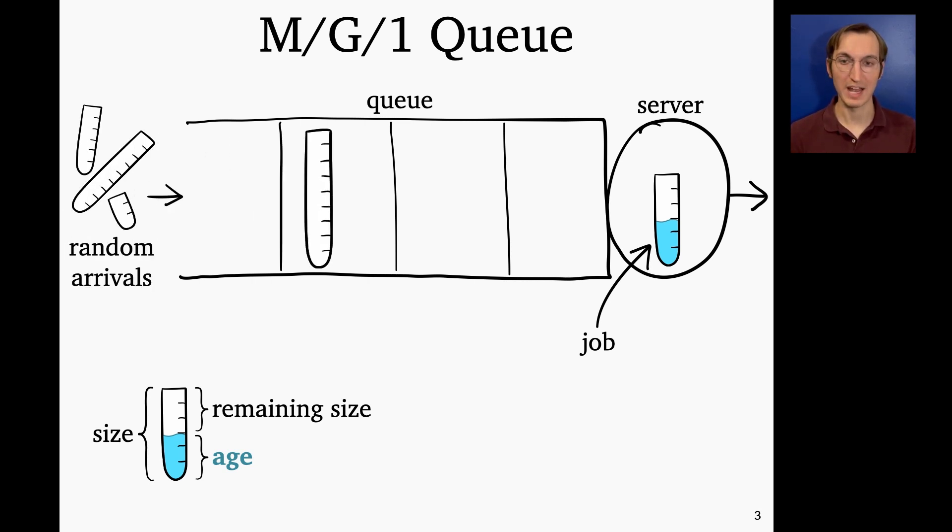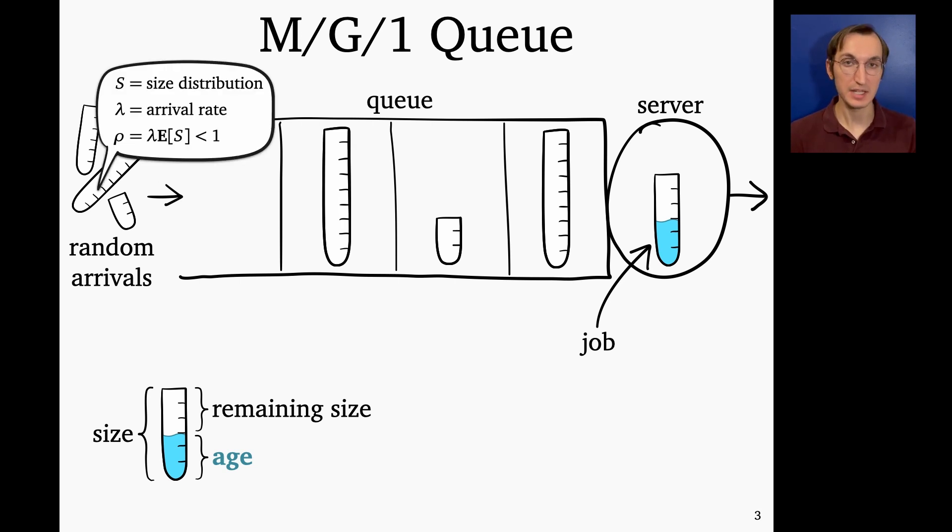And so we've got jobs randomly arriving over time, specifically M/G/1. That means that there's a size distribution, which in general could be anything. There's some arrival rate lambda, and we have a Poisson process of arrivals. And this gives the system load rho equals lambda times E of S. This is the fraction of time the server has to be busy and has to be less than one for the system to be stable. So that's the basics of the M/G/1 queue.